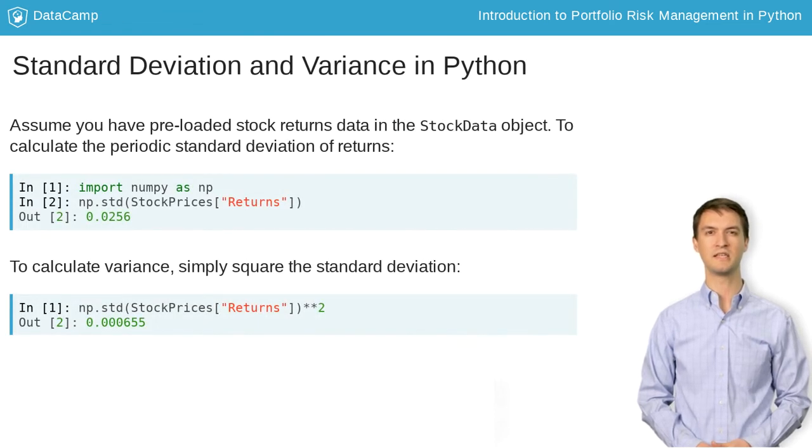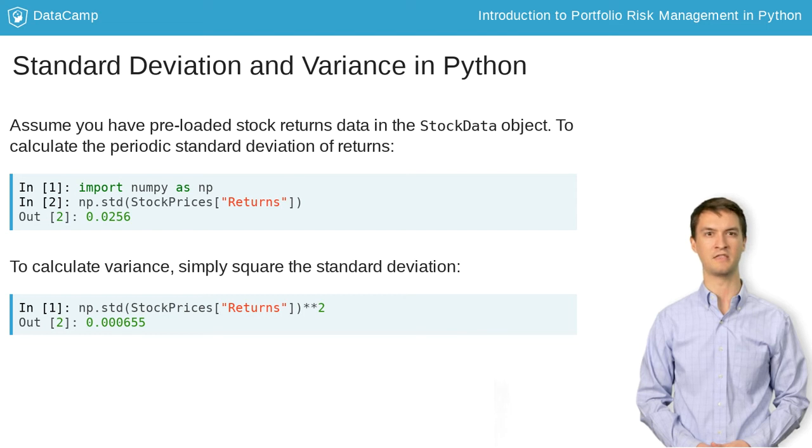You can easily calculate the standard deviation of returns using the STD function. If the returns are daily returns, then this function will output the daily standard deviation. In order to calculate the variance, simply square the standard deviation.